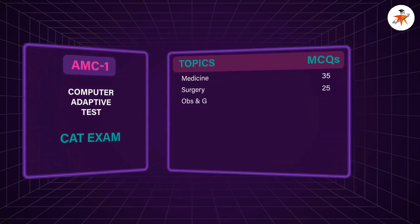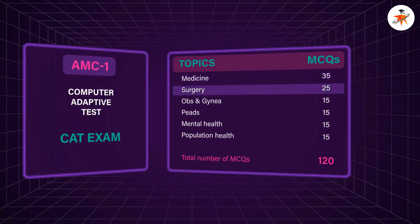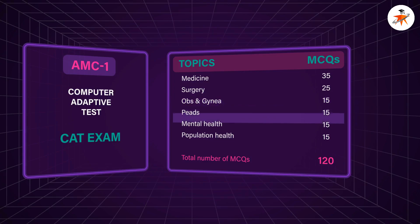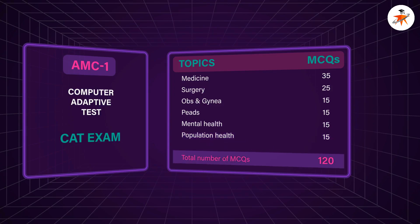You will have most questions from Medicine with 35 MCQs, followed by Surgery with 25 MCQs, 15 MCQs from Obstetrics and Gynaecology, 15 from Paediatrics, 15 from Mental Health, and 15 from Population Health MCQs, making a total of 120 scoring MCQs.